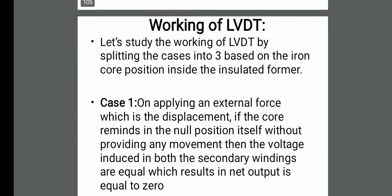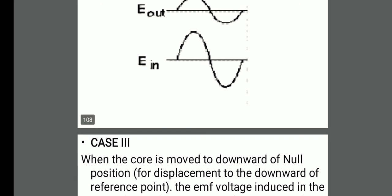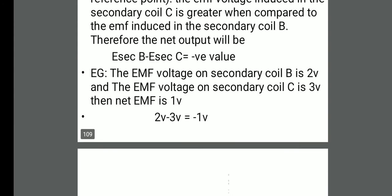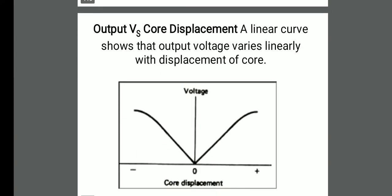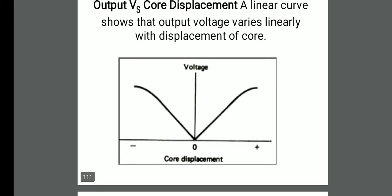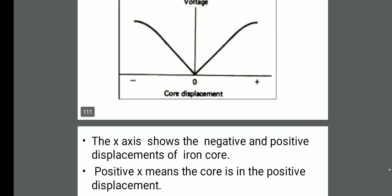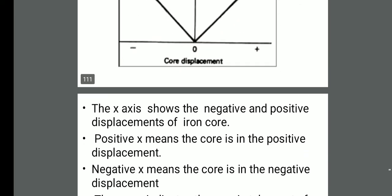That is how the LVDT works across three cases, each giving a different output. The LVDT can be used to measure displacement at a reference point. Looking at the output versus core displacement characteristics of an LVDT, the linear curve shows that output voltage varies linearly with displacement. The Y-axis shows voltage and the X-axis shows core displacement in both positive and negative directions. As the core displaces, the voltage increases in a linear way on both positive and negative sides. Positive X means the core is moving upward; negative X means the core is moving downward.